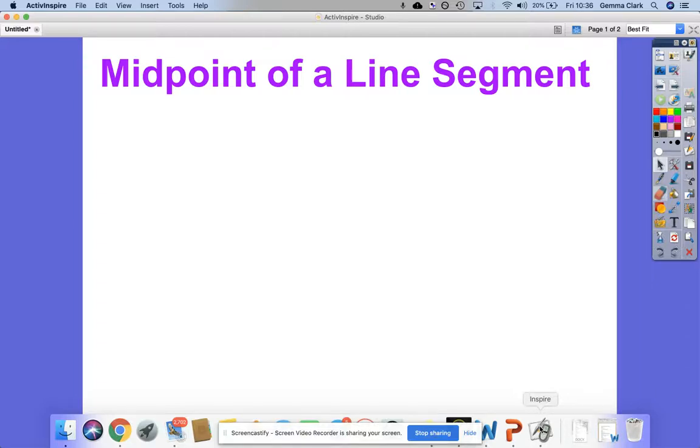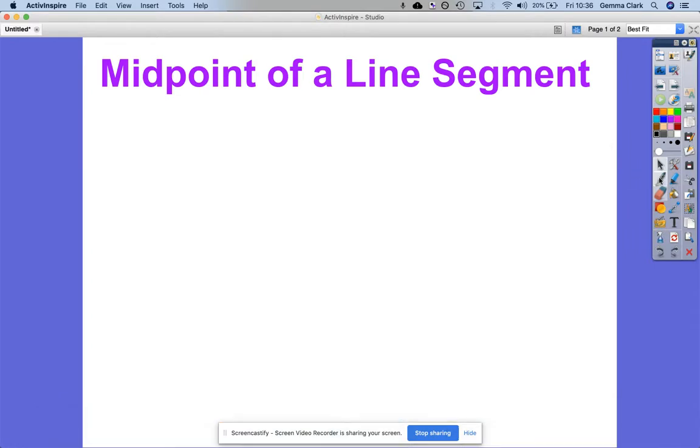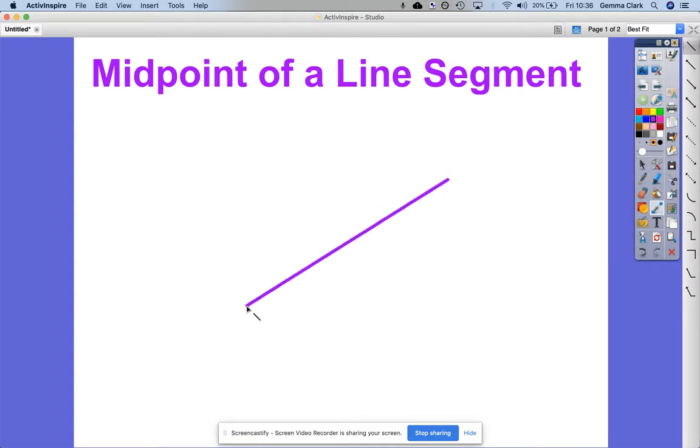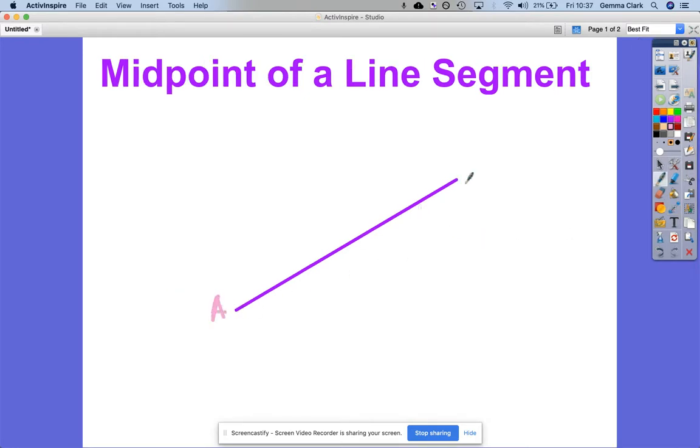Hi and welcome to a lesson on finding the midpoint of a line segment. Now let's just first of all define what a line segment is. A line segment is just that, it's a segment of a line, so it's defined as being between two set points. We might call these two points A and B, and so this line segment might be the line segment AB. Today's lesson is going to be focusing on finding the midpoint.